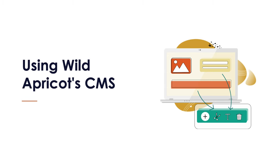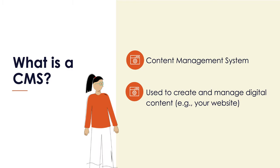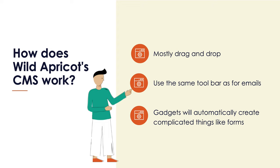Now let's talk about how to actually use Wild Apricot's CMS. What is a CMS? It's a content management system — a way to create and manage all the content on your website: the text, the images, everything like that. Wild Apricot's CMS is mostly a drag-and-drop builder, aiming to be as simple as possible. It should be very familiar if you're used to working with other website editors or email tools, because it has the exact same toolbar you'd see in Microsoft Word — font tools, bold, italic, underline, font size selector, color picker, anything like that.